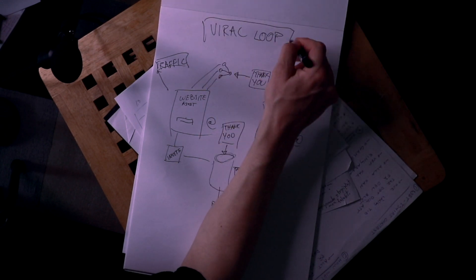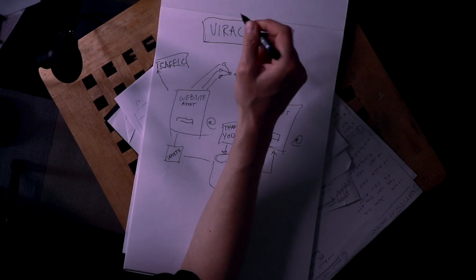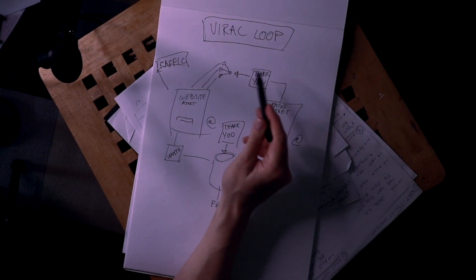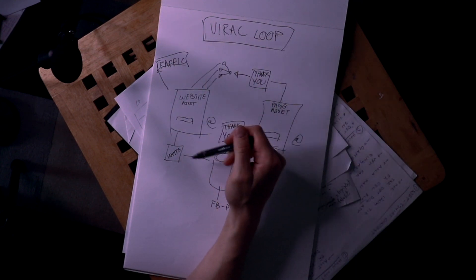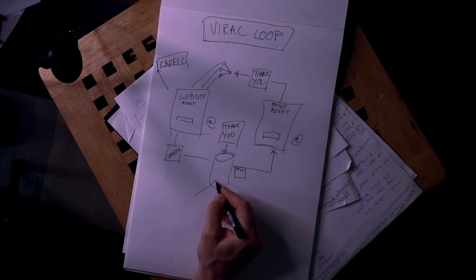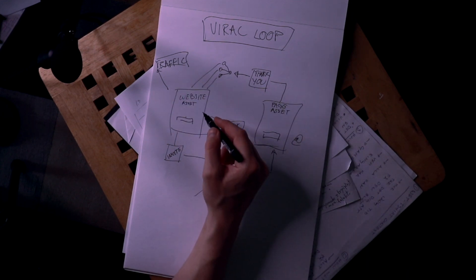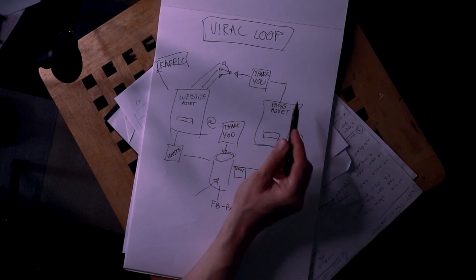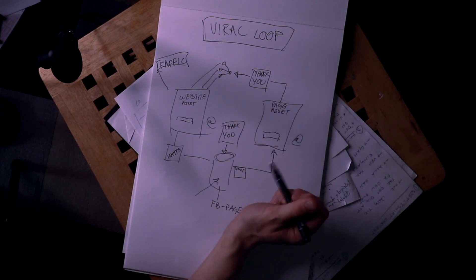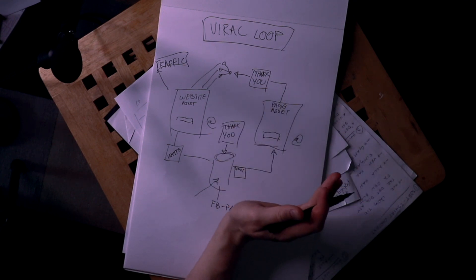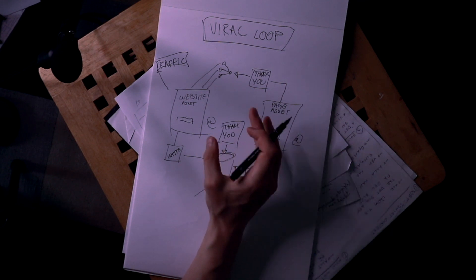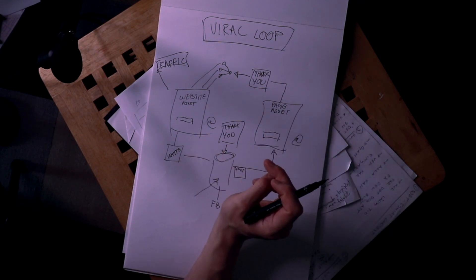What the viral loop does is that it creates an ecosystem where the traffic never stops flowing. So if people come in through Facebook, or if people come from the website, we are growing all of our places at once. There are more complicated viral loops, and I will go through more of them later on, but this is the base viral loop for our website.